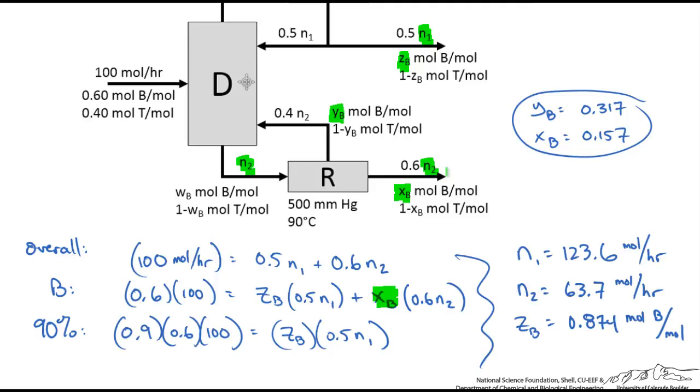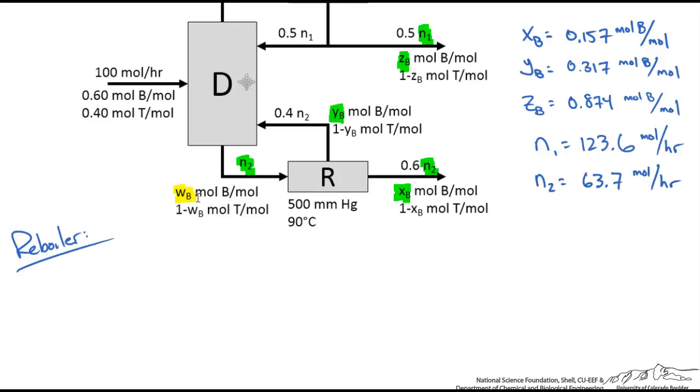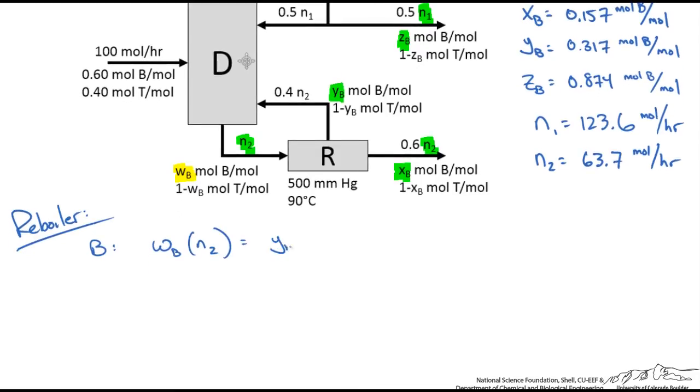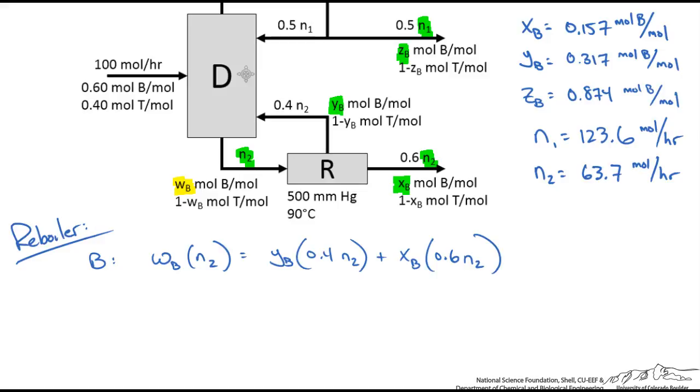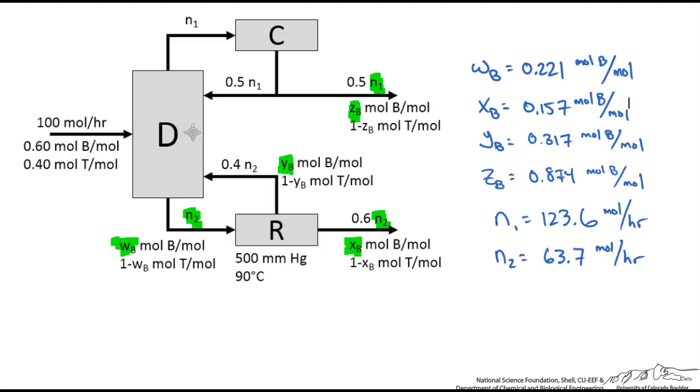The only thing left to solve for is our WB. We could do that by revisiting our reboiler balances. On the reboiler all we need is one balance, since we have one unknown. I'll write a benzene balance. The mole fraction of benzene times the incoming stream equals the mole fraction of benzene times the top stream, 0.4N2, plus the mole fraction of benzene in the bottom stream, XB times 0.6N2. Using N2 of 63.7 and our XB and YB values reported above, we get an incoming mole fraction of benzene at 0.221. Now we've solved for all our unknowns.